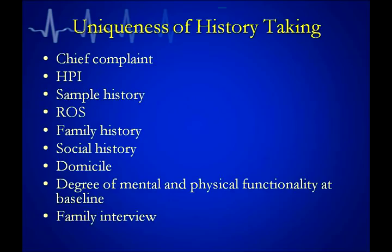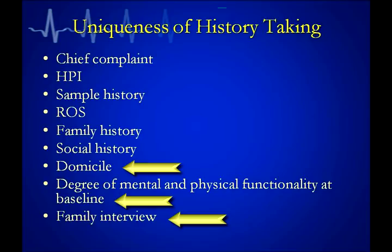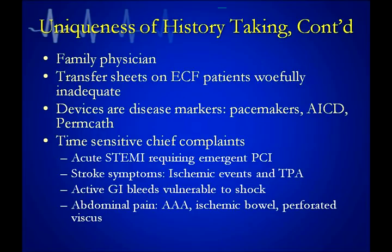I'm not going to bore you with standard history taking, but I want you to look at what we should be adding to the history in a geriatric evaluation. We do want to know where they're domiciled because transitions of care will depend on that. What is their degree of functionality at baseline? What is their mental status at baseline? Sometimes we have to rely on family interviews and physician calls to find out that baseline. When they come from the nursing home, transfer sheets are virtually useless, and we need to change that to make good informed decisions.